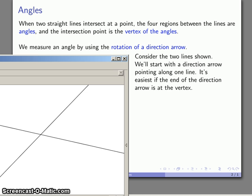Alright, so let's try to measure one of these angles. What we'll do is take a direction arrow and note that our direction arrow is initially pointing in the direction of this line.